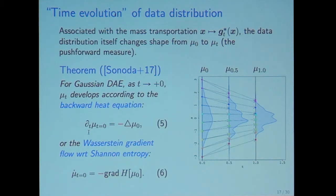Equivalently, this equation is equivalent to the Wasserstein gradient flow with respect to Shannon entropy in equation six. We use partial T in equation five and the dot in equation six. This is because in equation five, this is PDE, partial differential equation on R^D. On the other hand, six is ordinary differential equation on the space of probability density functions on R^D.